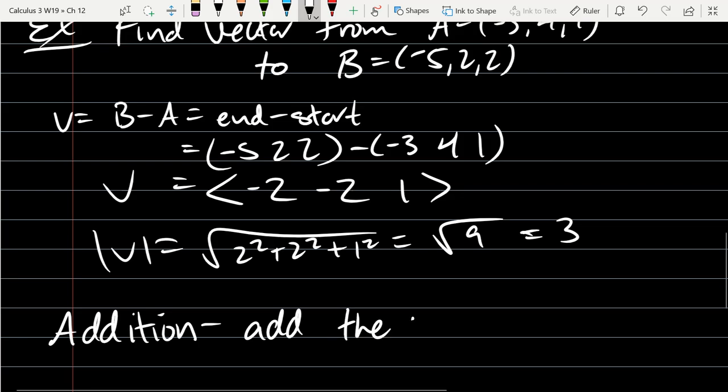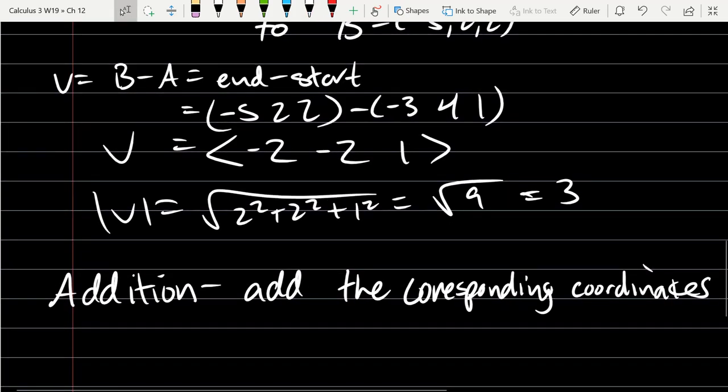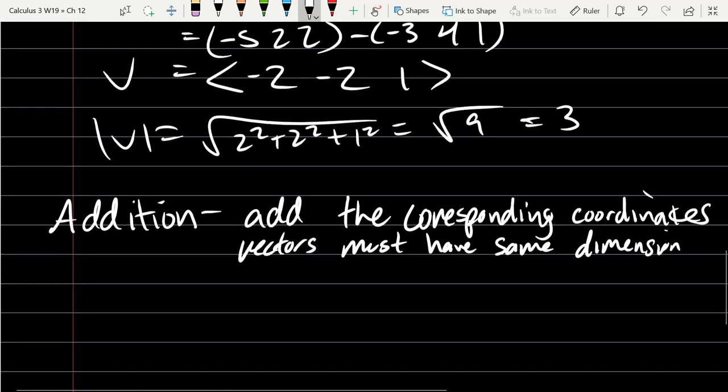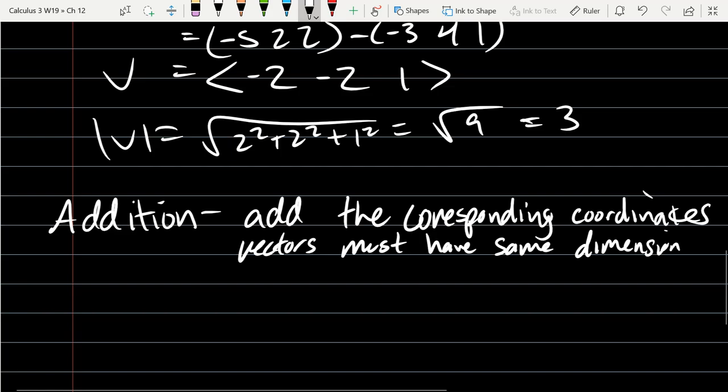We're going to look at addition and scalar multiplication. We'll start with addition, which we already did. All you do in addition is you add the corresponding coordinates. Now if you're going to add corresponding coordinates, your vectors have to be the same dimension. If your vectors aren't the same dimension, you're going to not have coordinates that line up correctly. So everybody's got to be in 2 dimensions or 3 dimensions or n dimensions.